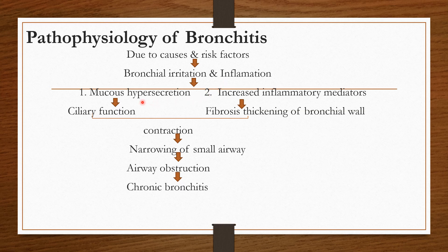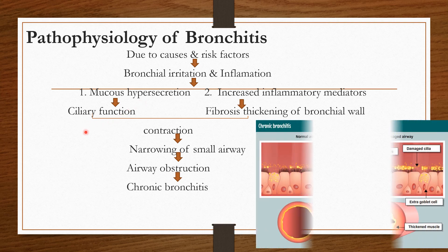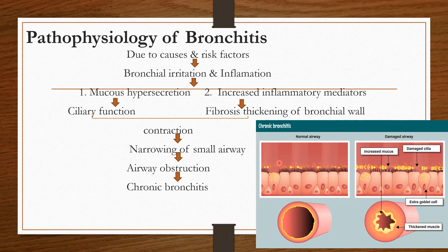The mucous is secreted and the mucous secretion impairs ciliary function. I already told you that cilia are hair-like structures present in the bronchioles. There is excess mucous associated with enhanced mucous secretion, and ciliary functions are enhanced and impaired.